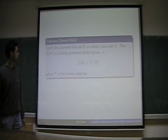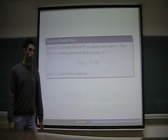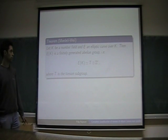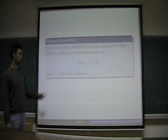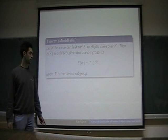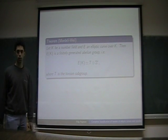By Mordell-Weil's theorem, if k is a number field and E an elliptic curve over k, then E(k) is a finitely generated abelian group. In other words, E(k) can be written as T plus r times Z, where T is the torsion subgroup.